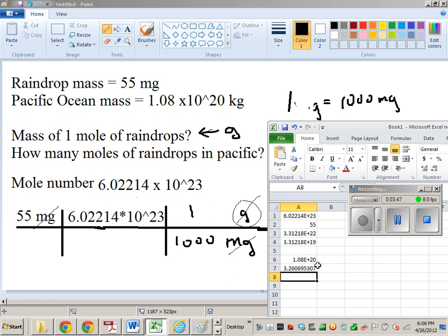So apparently 3 moles, or 3.26 moles of raindrop fits in the Pacific Ocean. Kind of a weird question, but kind of weird.